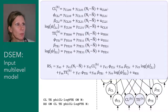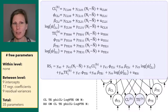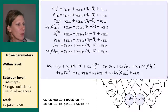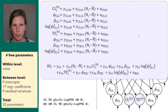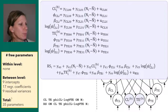In this model, there are still no parameters at the within-person level. At the between-person level we now have nine intercepts — eight for the random effects and one for RS — 17 regression coefficients (eight in the random effects equations and nine in the RS regression), and nine residual variances. There are no residual covariances, as there are no two-headed arrows between residuals. So the total number of free parameters in this model is 35.